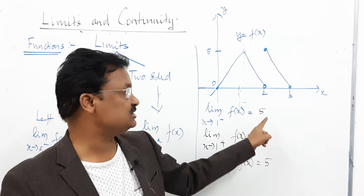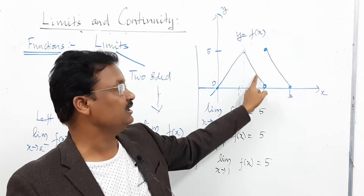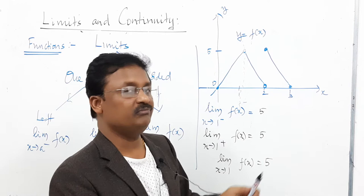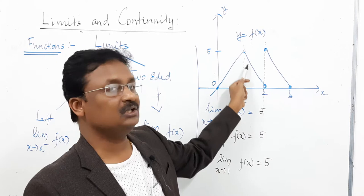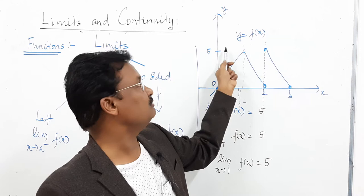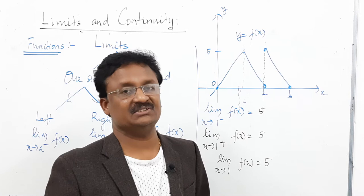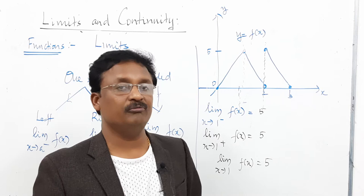Since the left limit equals the right limit at x = 1, the two-sided limit is 5. But for x = 2: the left limit is 0 (following the curve from the left) and the right limit is 5 (following from the right). Since these are different, the two-sided limit at x = 2 does not exist.